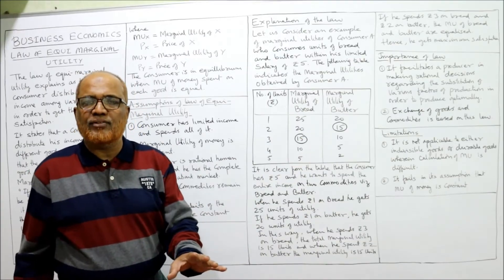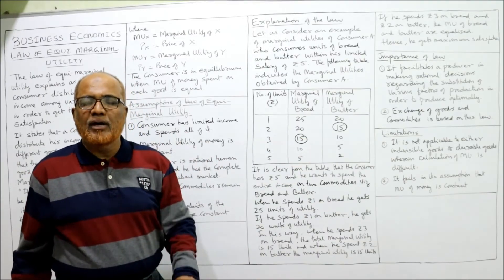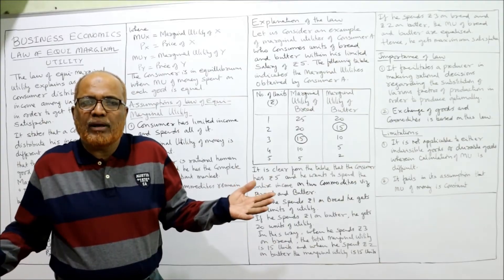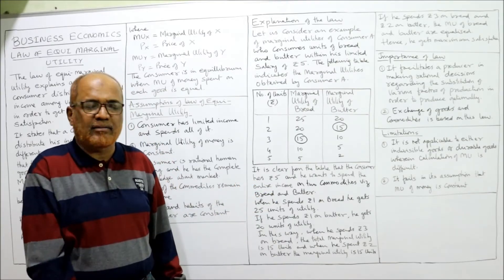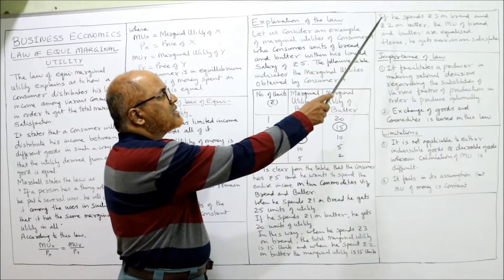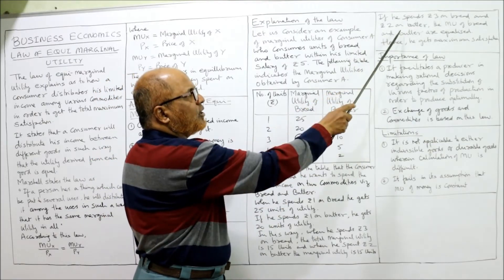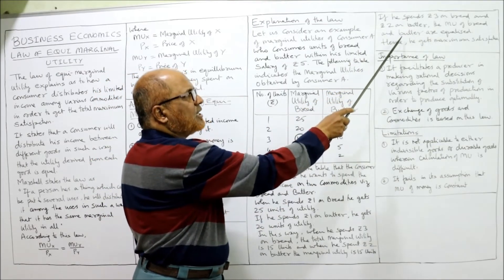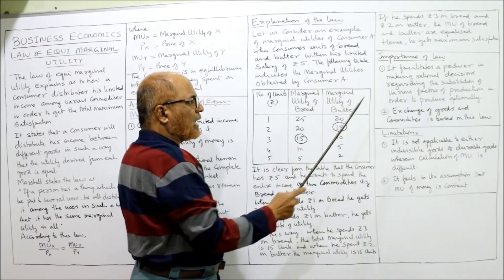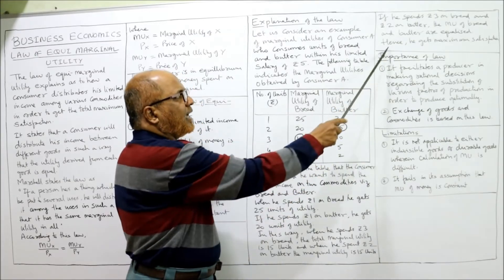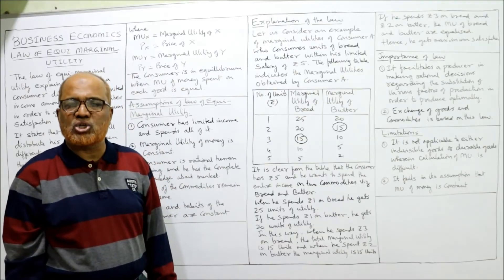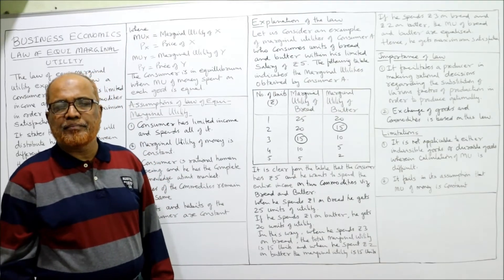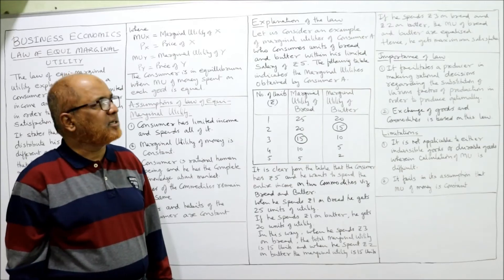In that case he will be at equilibrium — consumer A will be at equilibrium with maximum satisfaction. By spending 3 rupees on bread and 2 rupees on butter, the marginal utility of bread and butter are equalized, and hence he gets maximum satisfaction. This is the law of equi-marginal utility.